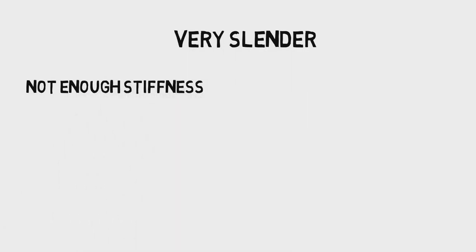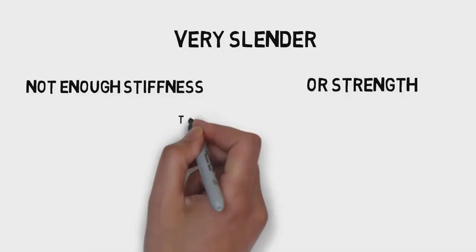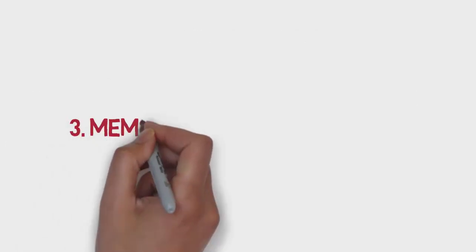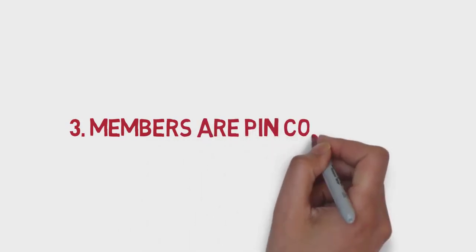The reason for this is that truss is a very slender member which doesn't have enough stiffness or strength to carry shear or moment. You can think of this like a rope, although trusses can be very stiff members. The third assumption is that members are pin connected.